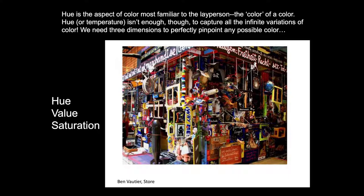Hue is the aspect of color most familiar to the layperson — the one you may feel most comfortable with as you begin your exploration of color. When you ask someone what color something is, they will typically respond with a hue: green, orange, or a greenish blue. So hue, we can say, is the color of a color. But hue or temperature alone isn't enough to capture all the infinite variations of color. We need three dimensions to perfectly pinpoint any possible color: hue, value, and saturation.